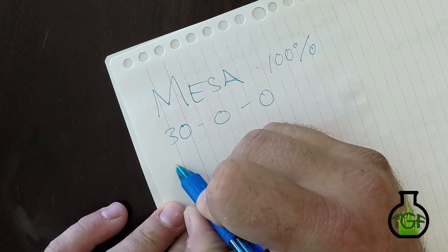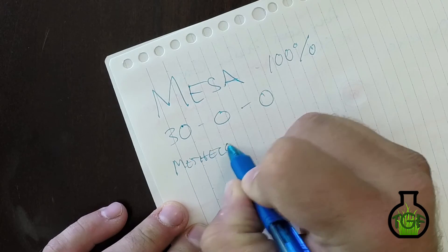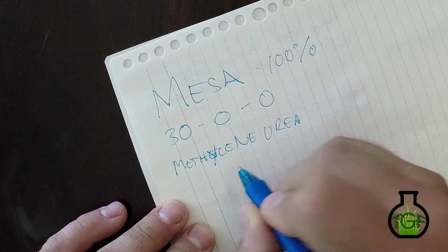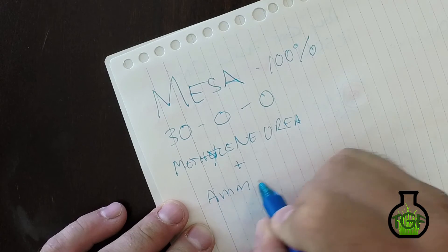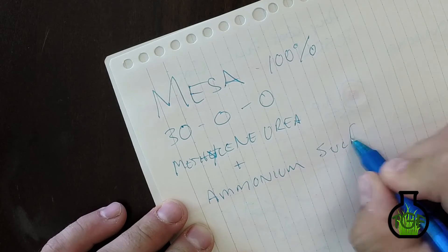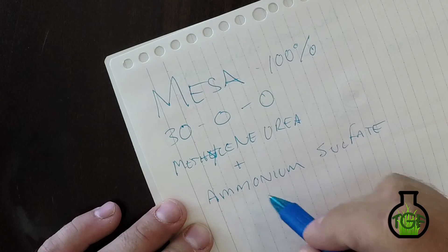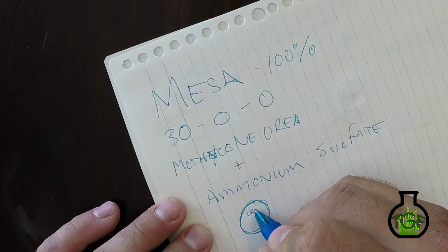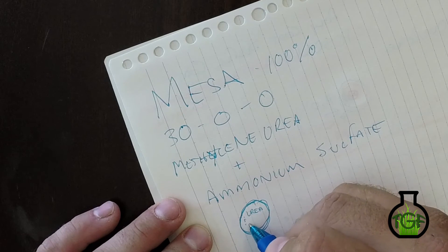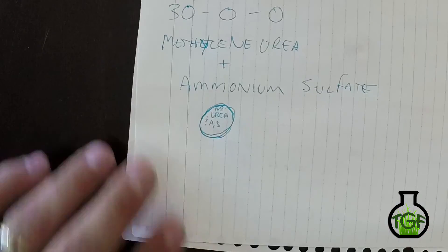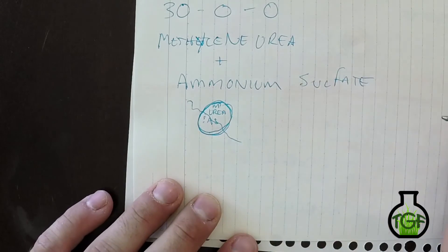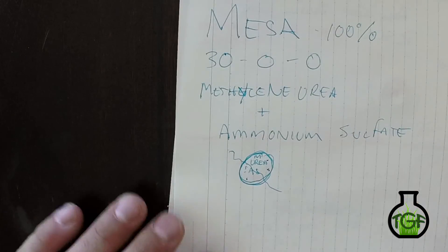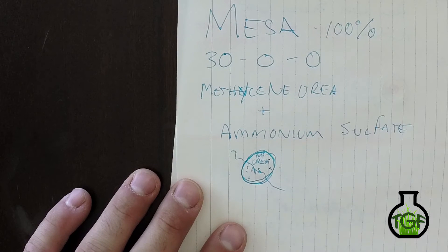This consists of methylene... methylene urea and ammonium sulfate in one prill. So we're going to have urea and AS all in one prill. And whether you cut this prill in half, it's still going to be methylene urea and ammonium sulfate.